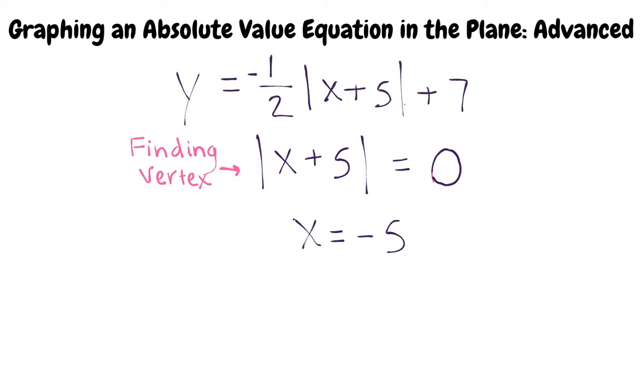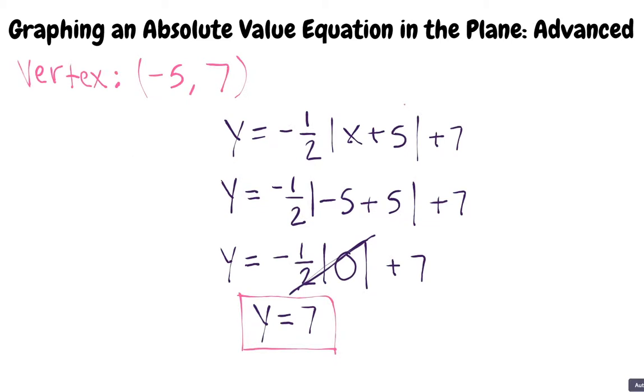Oh, so now that we know the x value of the vertex is negative 5, we plug it into the original equation and solve for y, right? Exactly! Let's do it. Plugging in negative 5 for x, we get that y equals 7. Now we know that our vertex is located at negative 5, 7 in the coordinate plane.